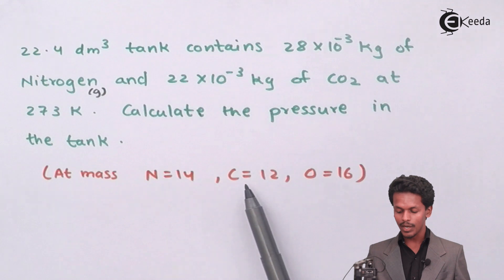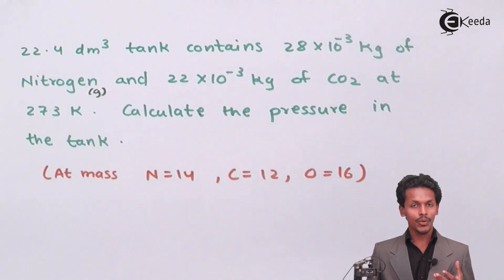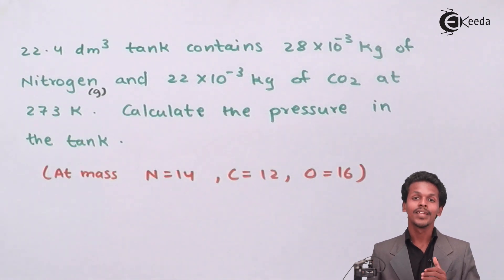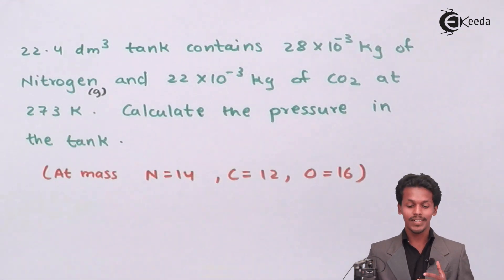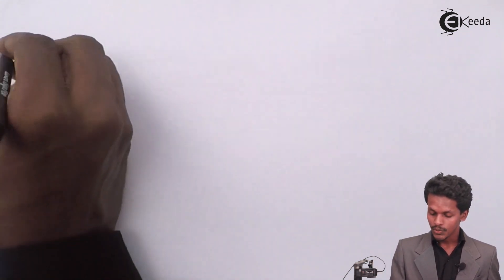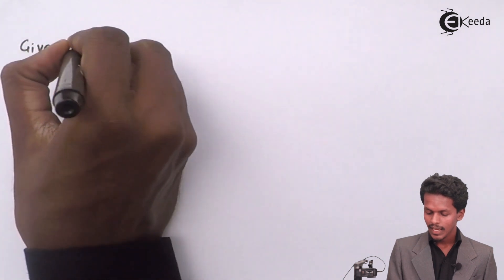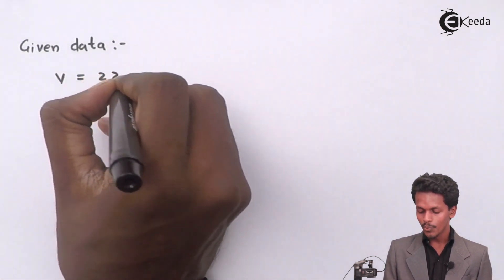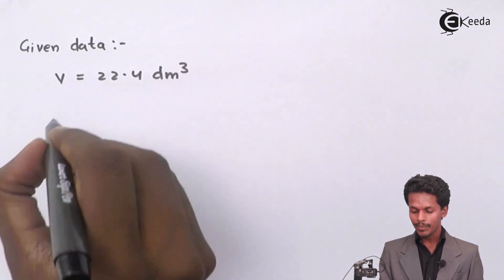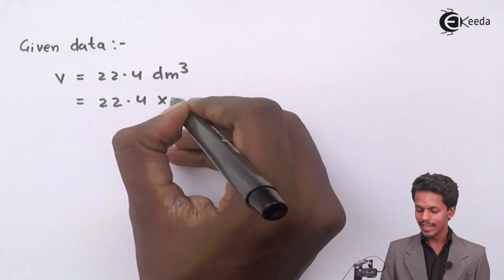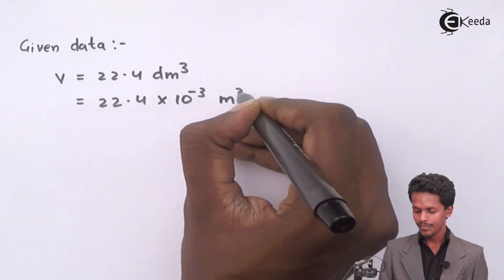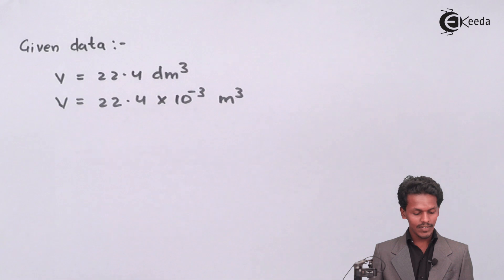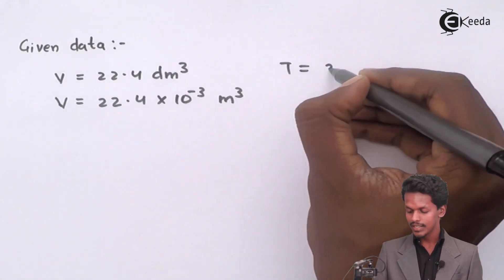The atomic masses are also given — for nitrogen, carbon, and oxygen. We will begin by extracting the data so it is easy to understand the numerical and move in the right direction. From the given data, the volume V = 22.4 dm³, which we convert to 22.4×10⁻³ m³. The temperature is given as 273 Kelvin.